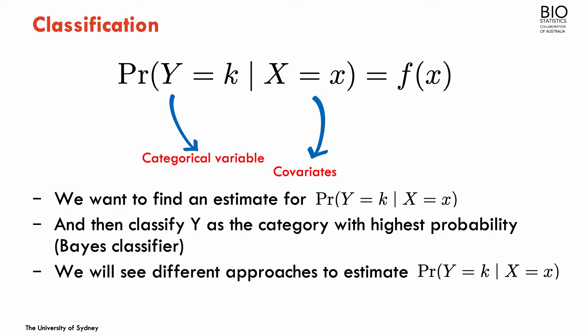In classification problems, the aim is to estimate the probability of each category of the outcome using a set of covariates. Once we have these probabilities, we classify Y as the category with the highest probability. This is known as the base classifier, and we're going to see different approaches to estimate this probability.